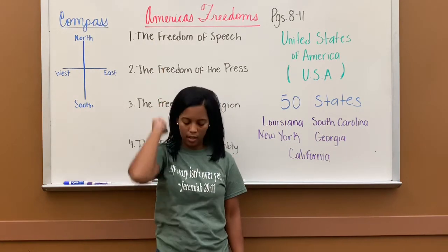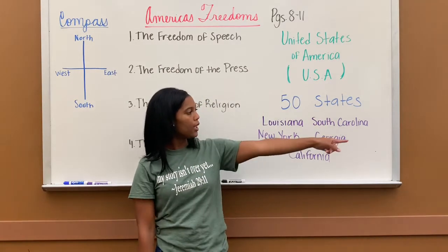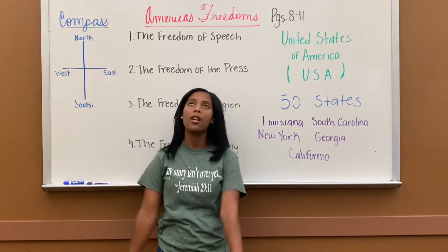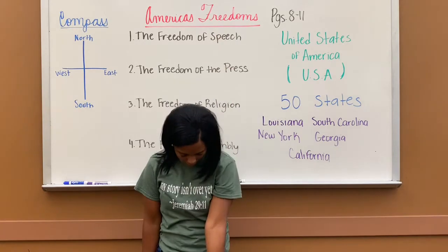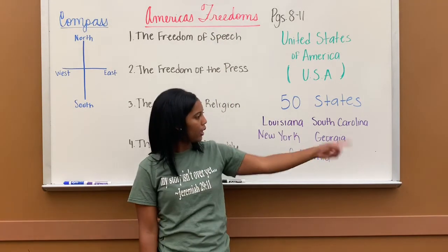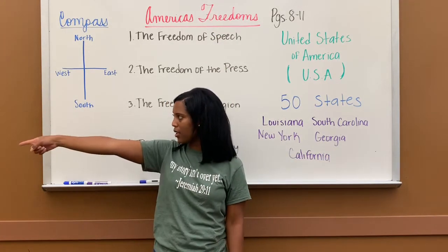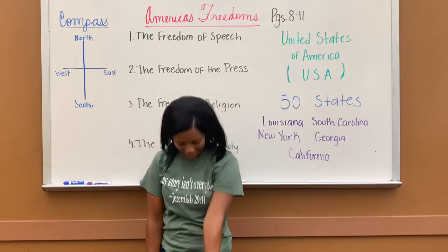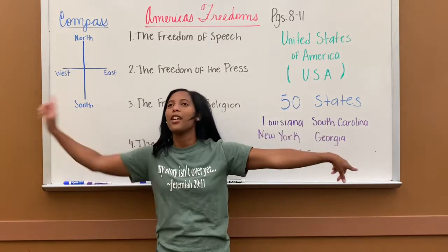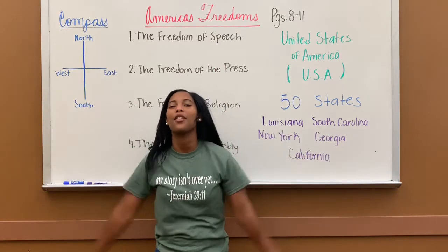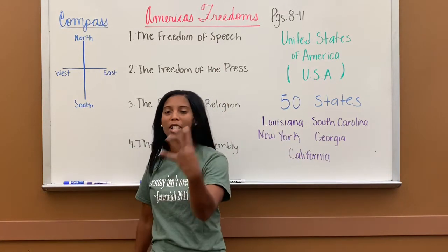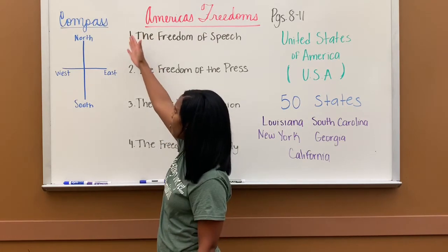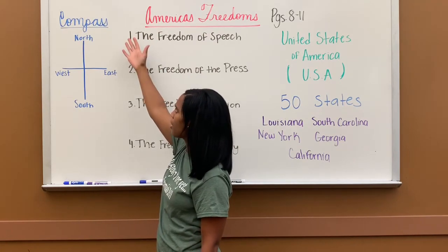So to review: north, south, east, and west — those are the four directions which we can find on a compass.